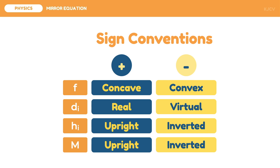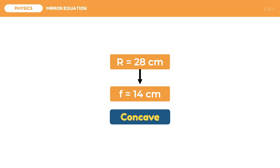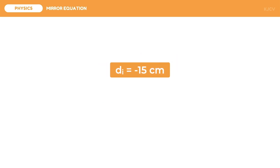To better understand this, let us try to describe some values. Here we have a radius of 28 cm. Since the radius is twice the focal length, we divide by 2 to get a focal length of 14 cm. Since this focal length is positive, the mirror is concave. Next, we have an image distance of negative 15 cm. Since this is negative, the image is placed inside the mirror, making it virtual. And we know that all virtual images are upright.